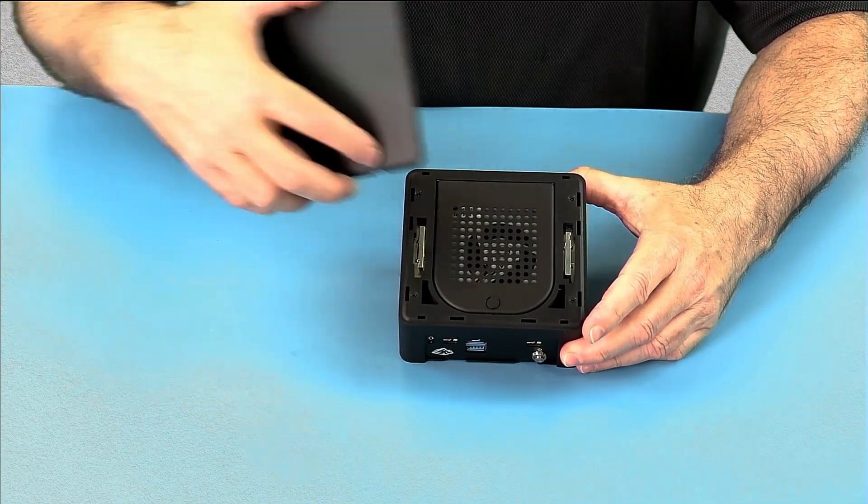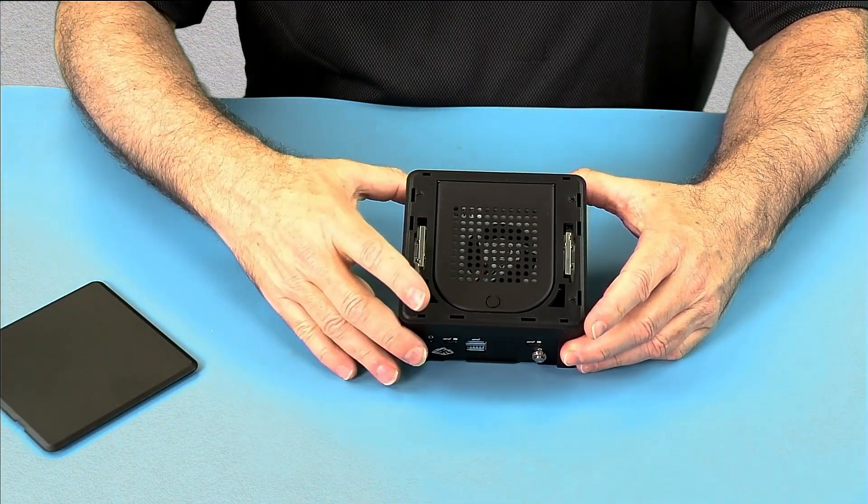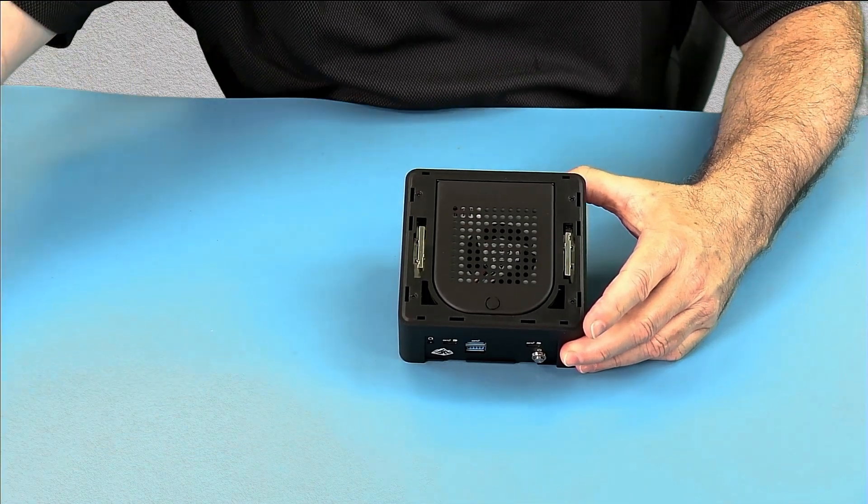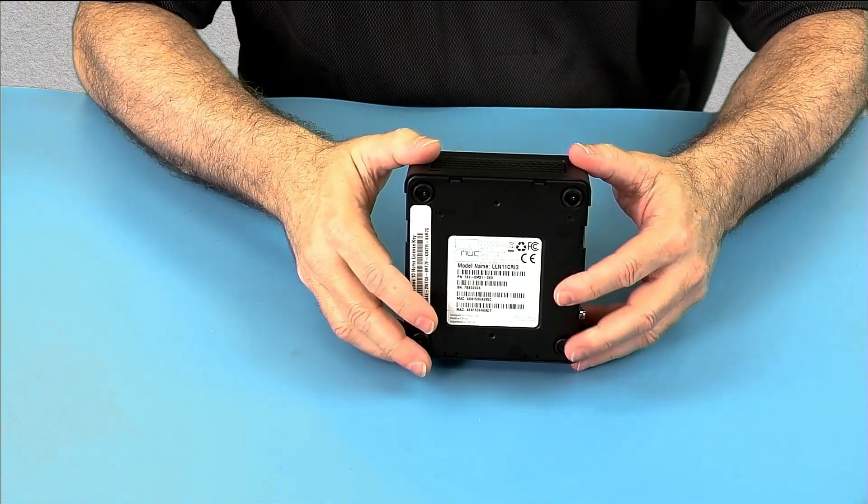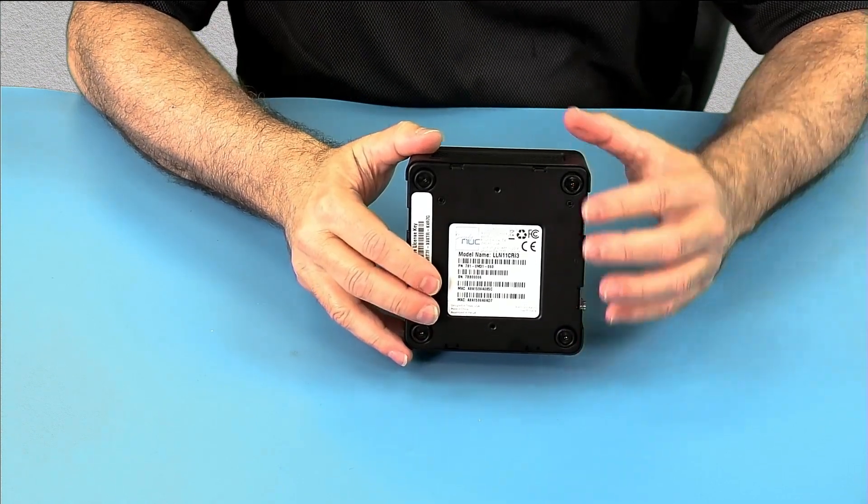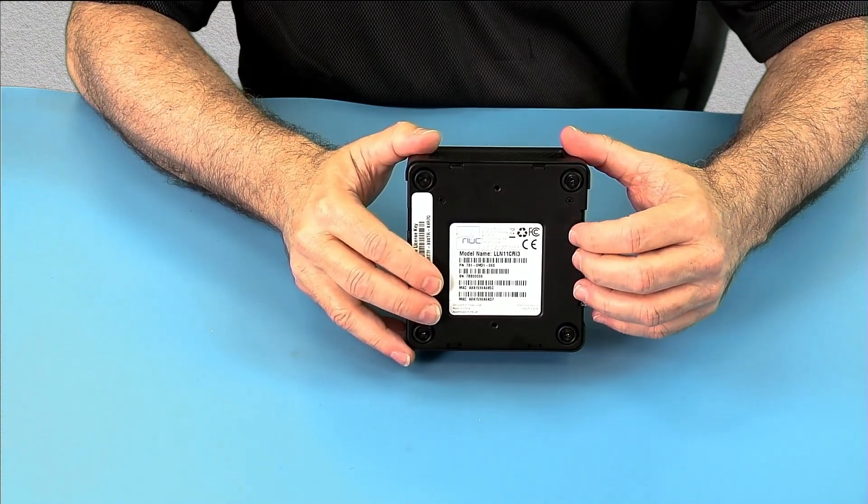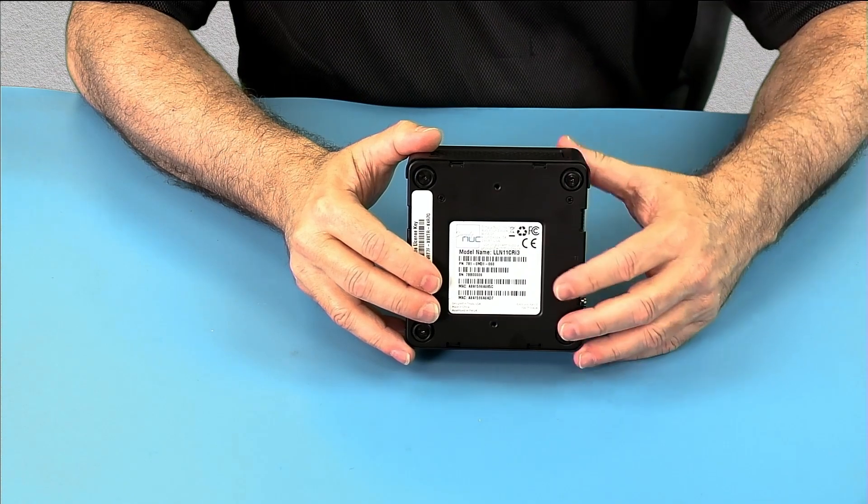And just popping the top off, as you can see, you would also get some additional cooling. Taking a look at the bottom, we have our, this one has windows and has our bar-coded sticker, but this is the product sticker.